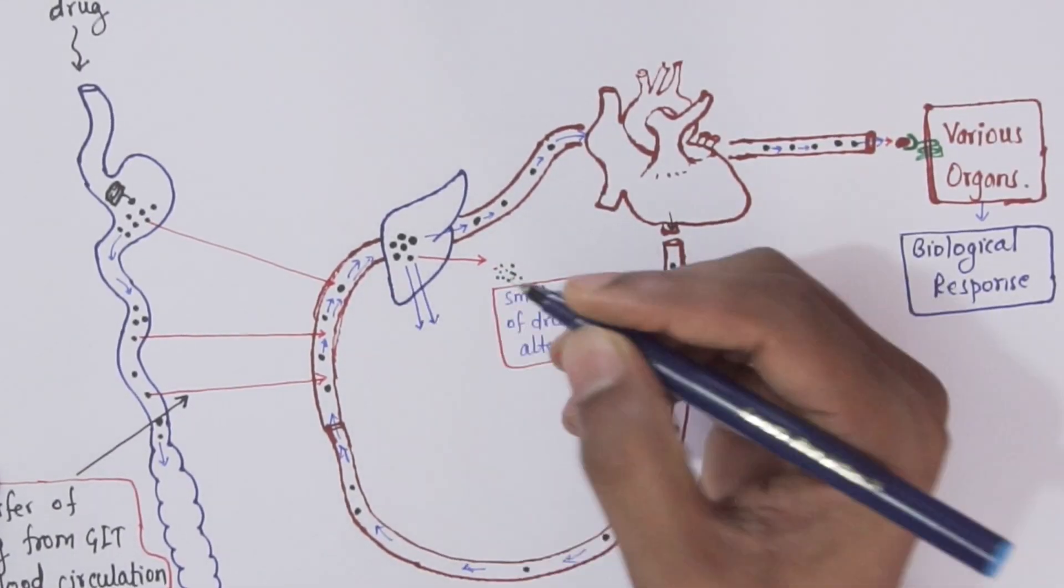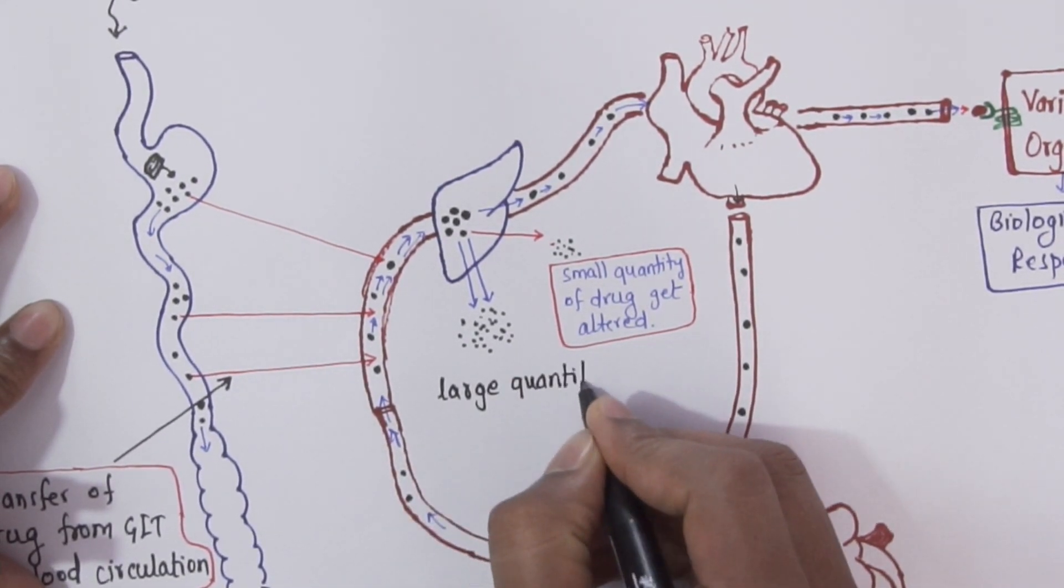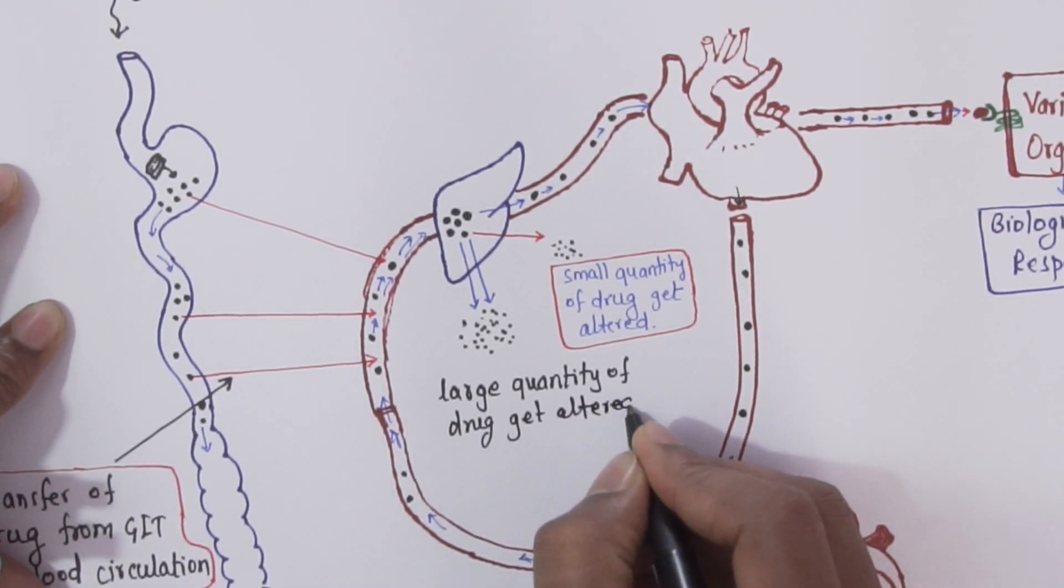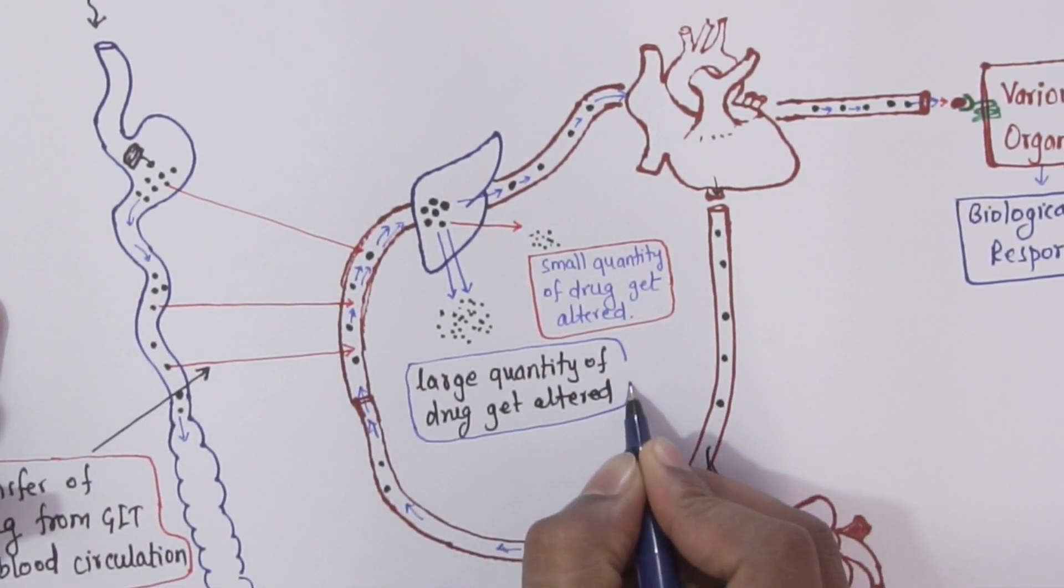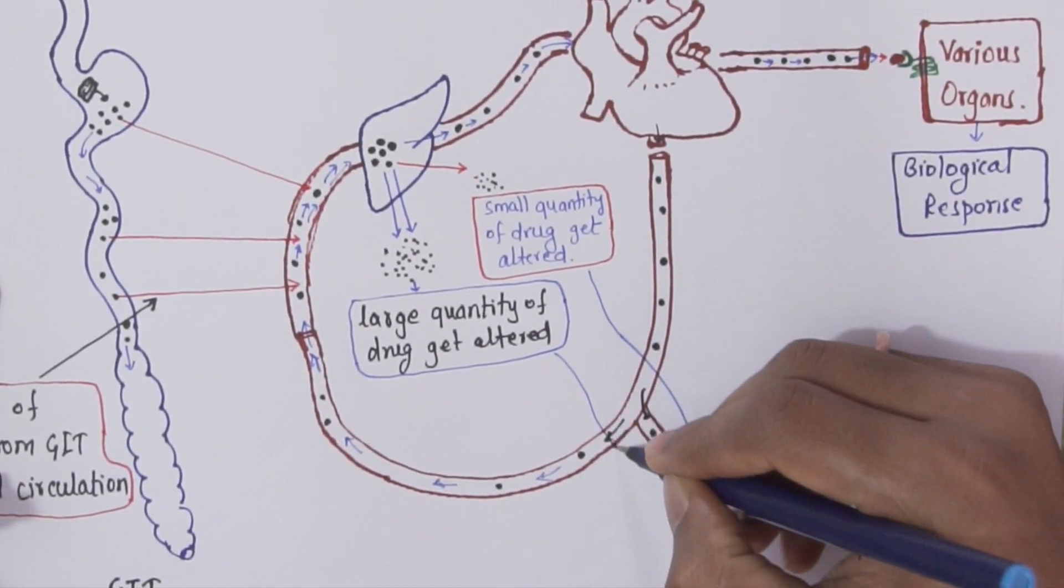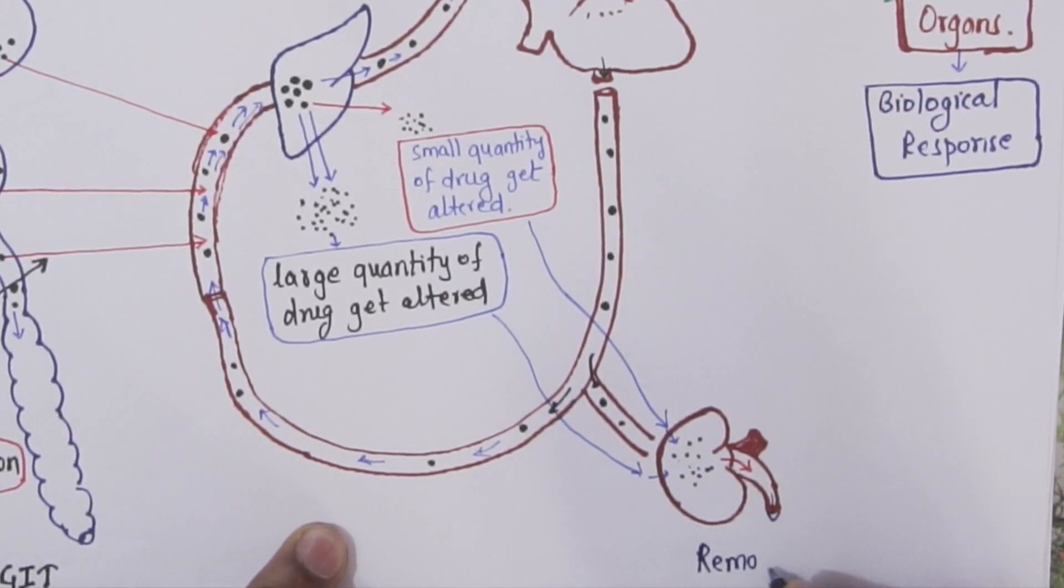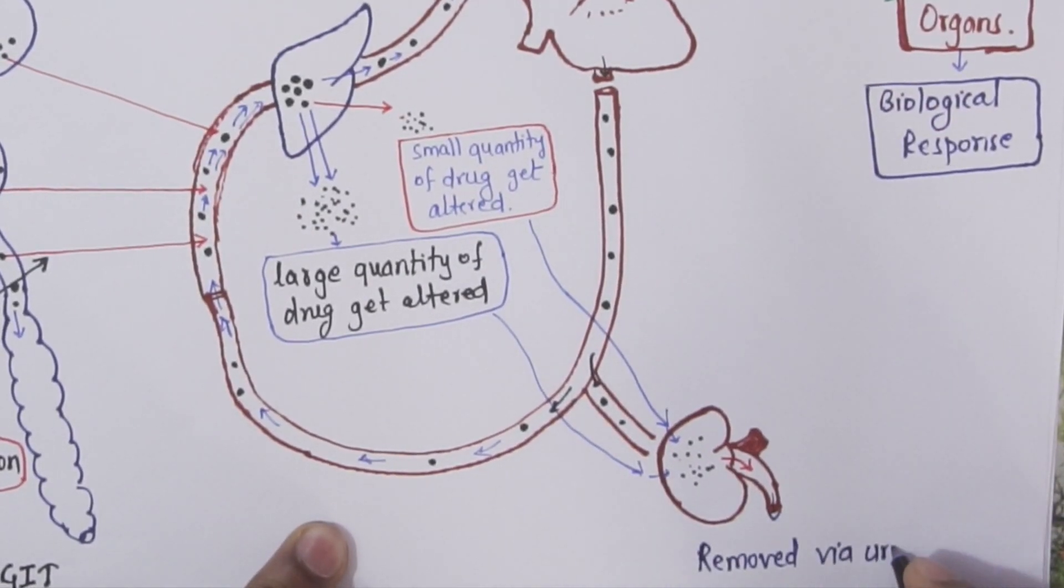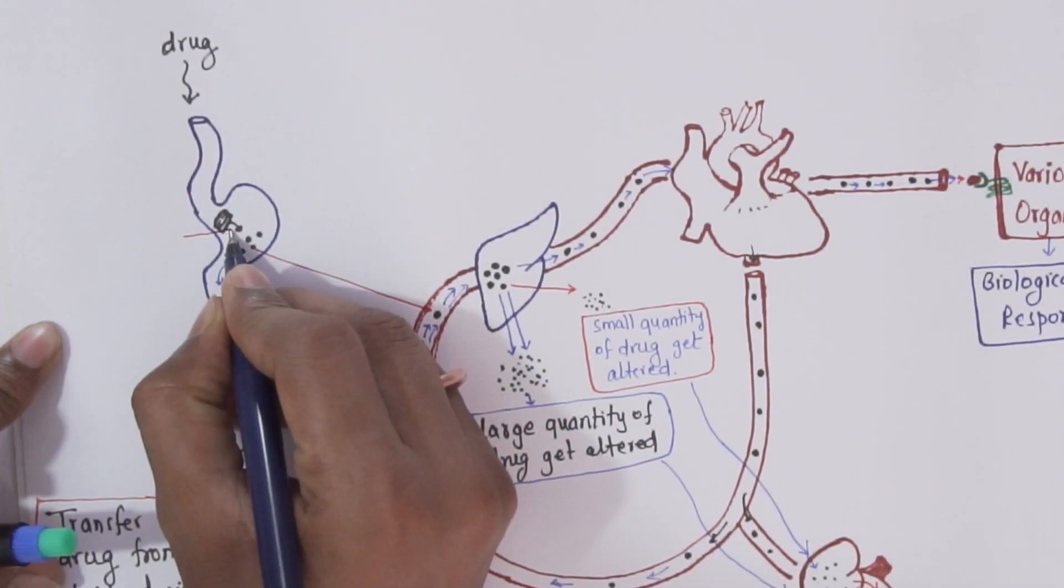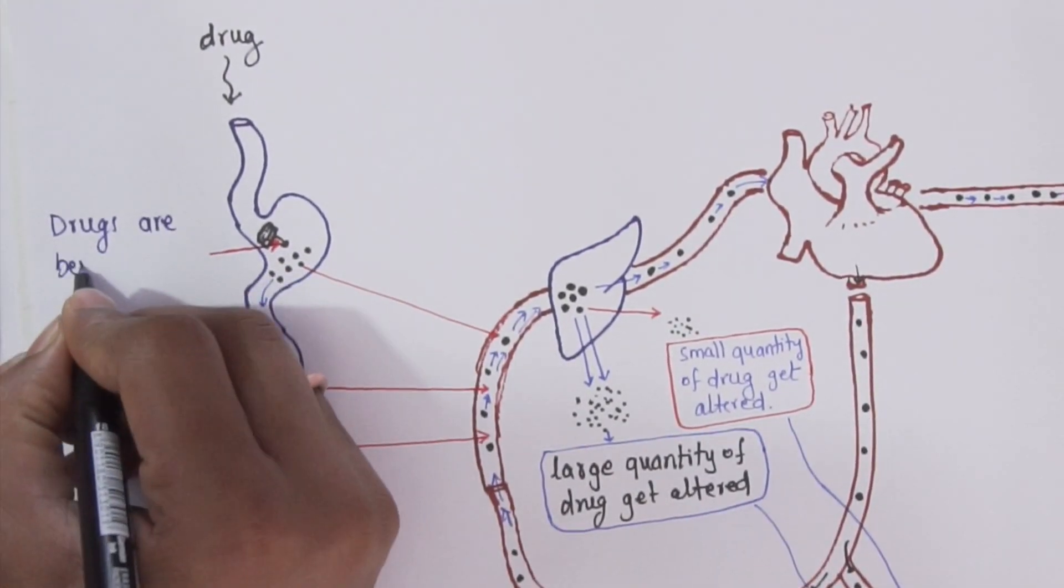Moreover, the drug will also be distributed to the GIT and liver where the large quantity of drug will be altered or destroyed. This is called metabolism. These altered products are called metabolites and they will go to the kidney from where they will get excreted out from our body.